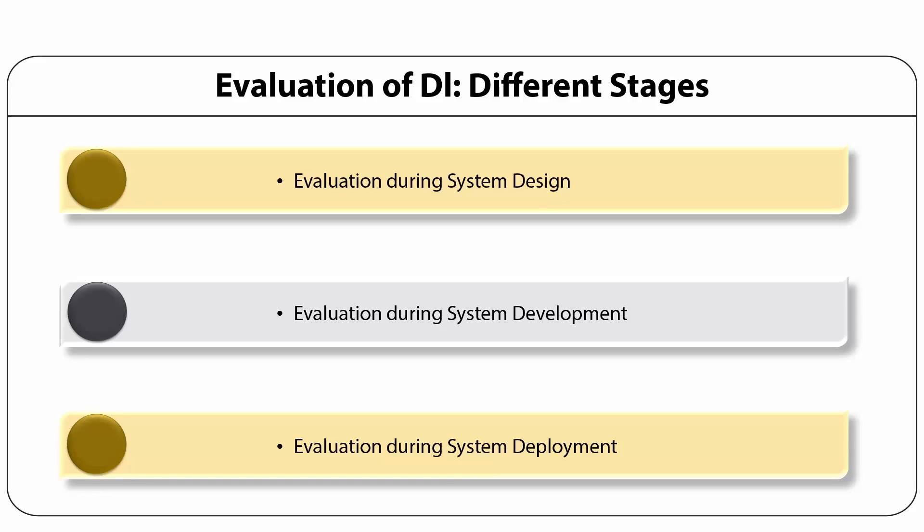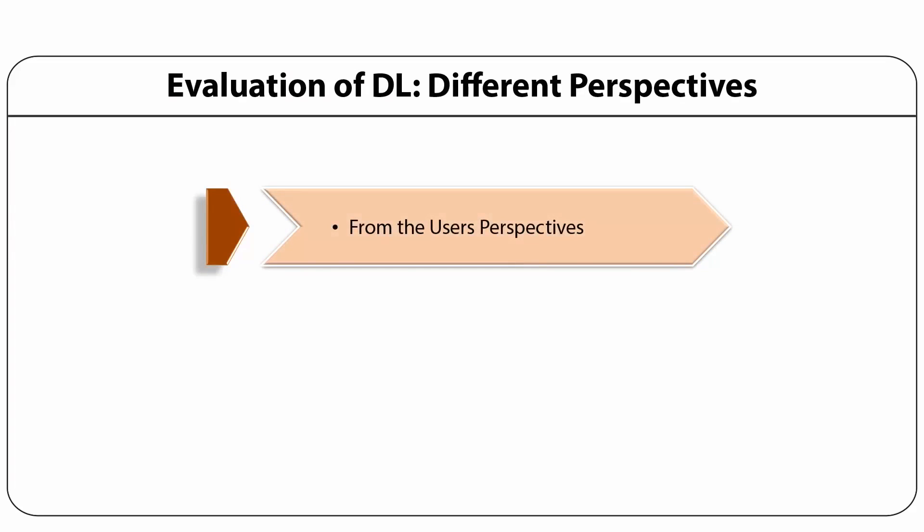System deployment means the software is ready for deployment. How well does a digital library support the needs and demands of the user community? This can be very hard to evaluate because of the different objectives of the user community. It should support information needs, tasks, and activities of individual users. The user also expects various facilities such as fast navigation, prompt retrieval, browsing, and interaction. Therefore, the evaluation needs to be carried out from the user's perspective.